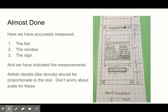Alright, we're almost done. We've accurately measured and marked the flat, the window, the sign, and the measurements. Artistic details should be proportionate, but you don't need to worry too much about the scale. That's a process that will happen more effectively when it's actually getting painted on the backdrop.